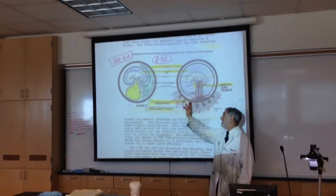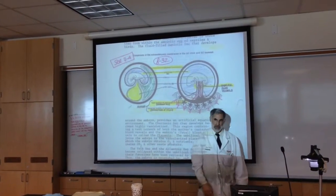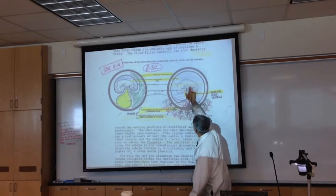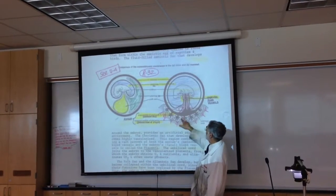And on this side of the Chorionic sac, it develops these finger-like extensions called Chorionic villi. And we learned that there's an umbilical cord that goes from the baby to those Chorionic villi.